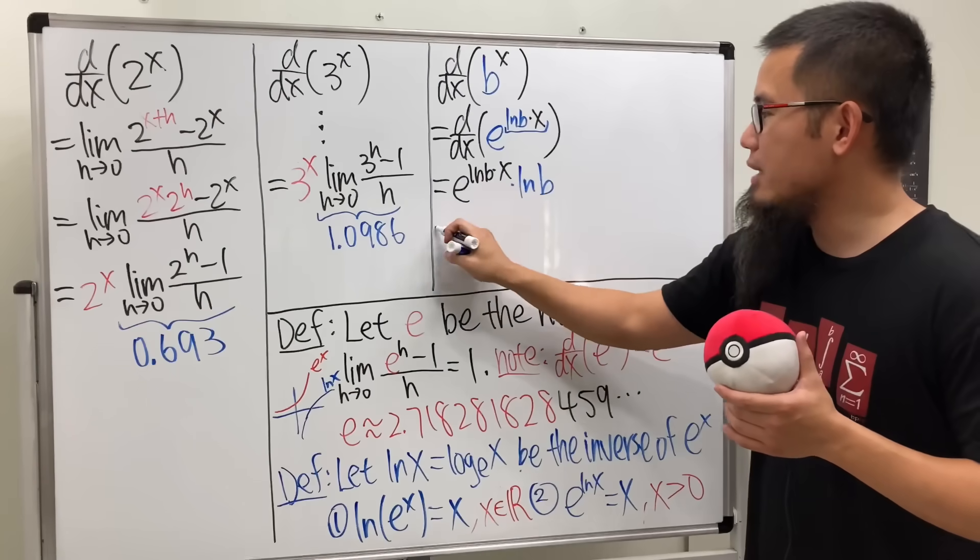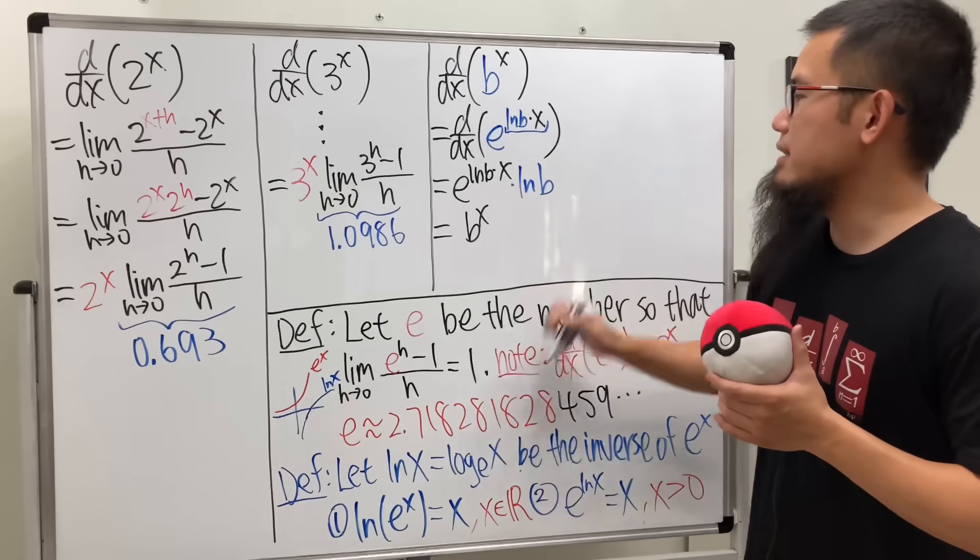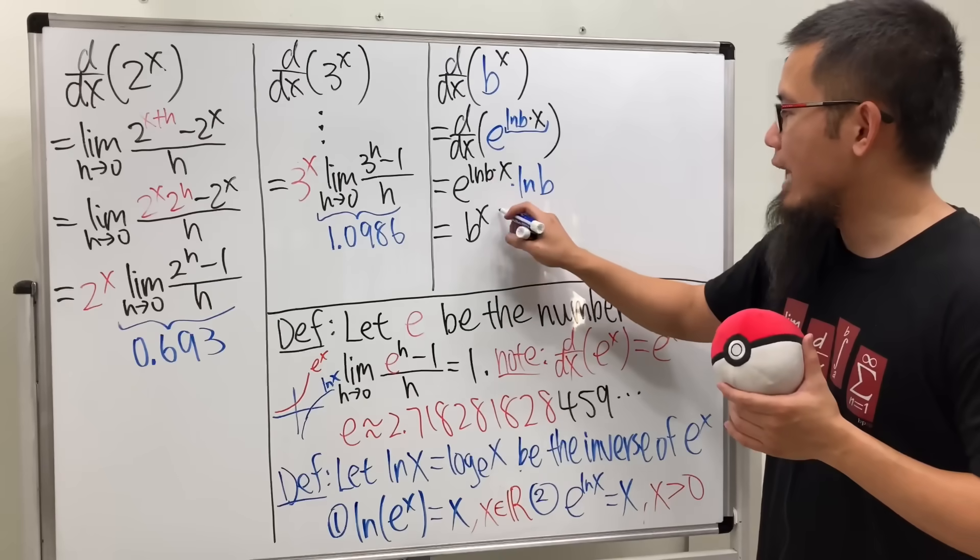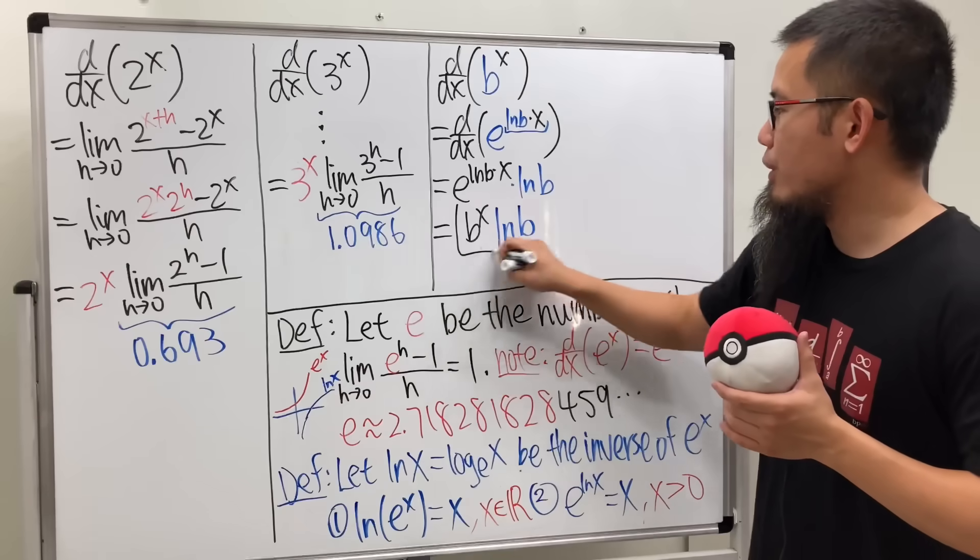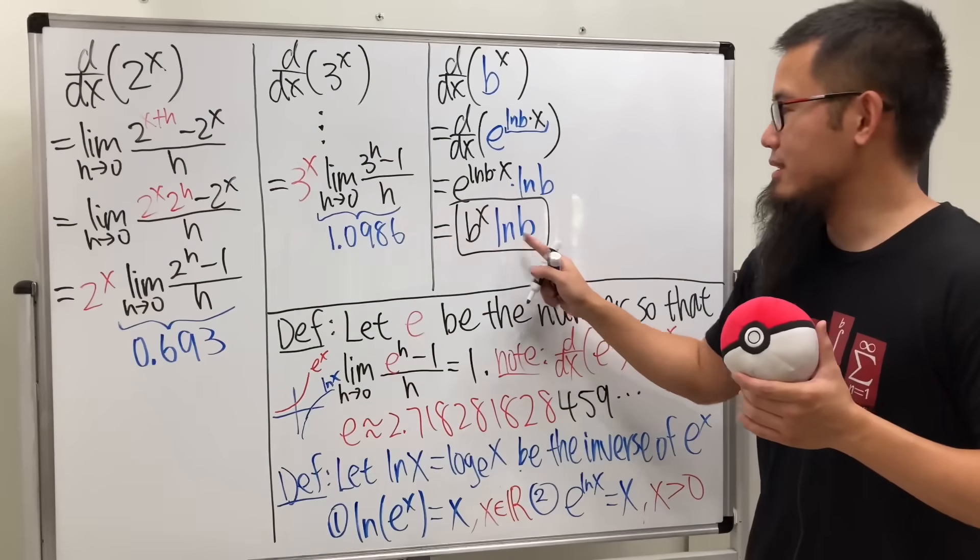And what's this? It's just that. It's just the original. Namely, we get b to the x. And you see, we will have to multiply by ln b. So what's this number then?